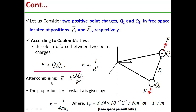After combining these two proportionalities, we get F = K·Q1·Q2 / R², where K is the proportionality constant defined as 1/(4πε₀). Here ε₀ is the permittivity of free space with value 8.854 × 10⁻¹² farads per meter, or equivalently Coulombs squared per Newton meter squared.